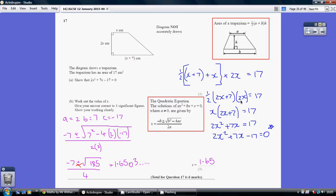Half times 2 is 1, so that simplifies down to that. Multiply out the bracket by the claw, minus 17 from both sides, and we get the quadratic equation we were asked to show.